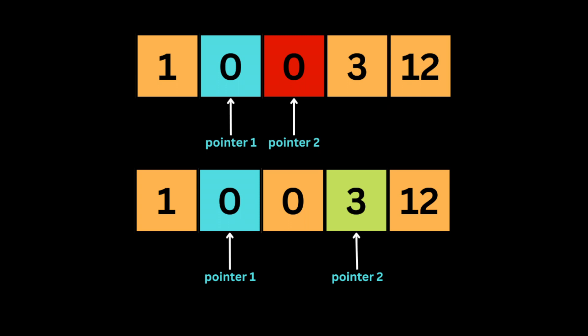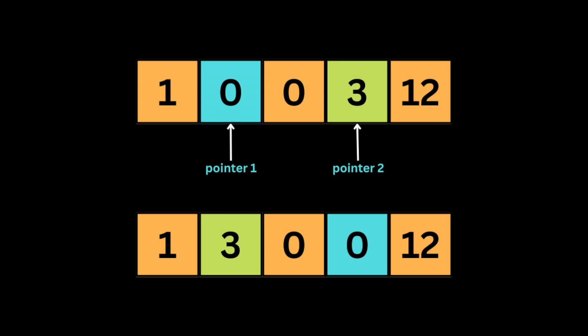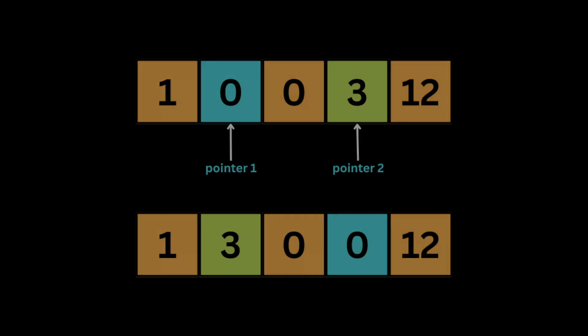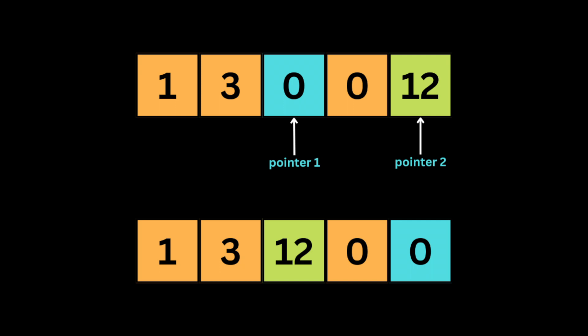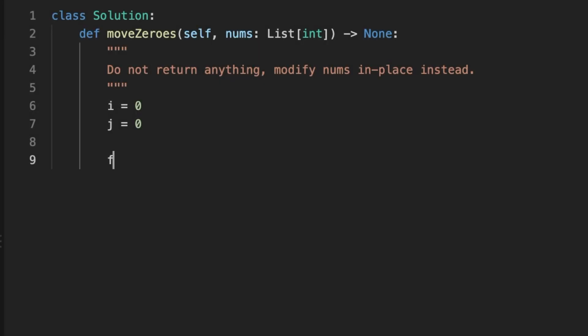Now pointer two is pointing to an integer that equals zero, so we don't need to do anything. We move pointer two to the next integer — it's three, which is non-zero — so we execute the swap between the two integers and move both pointers one position. Then we have the number 12, so we swap it and stop the loop because we've reached the end.